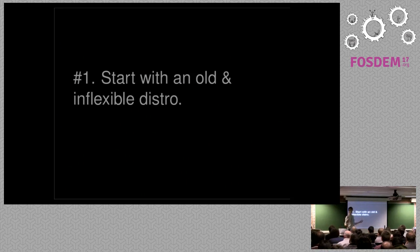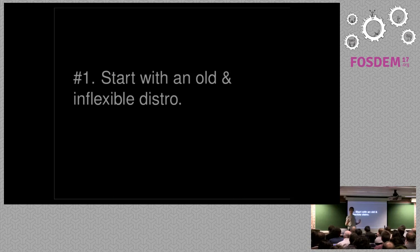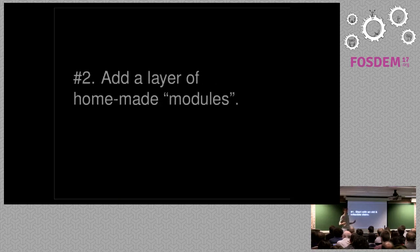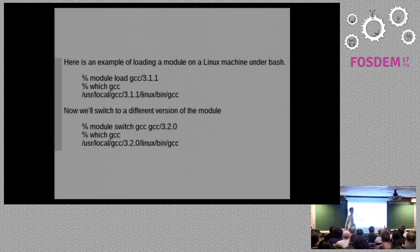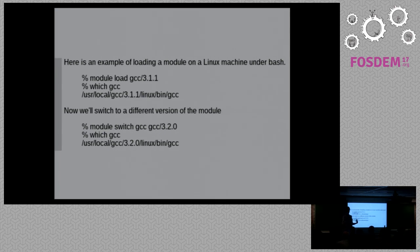Sysadmins have come up with solutions to improve on that situation. The main solution we're seeing is to add a layer of homemade modules. If you're not familiar with modules, it's a set of commands you can use from the shell - you can say I want to load this specific package like GCC at a particular version. You can select what you want in your environment. That's already a great improvement because it brings flexibility that HPC users actually need, since you have a machine with tens of users with different needs in terms of libraries, tools, and versions.